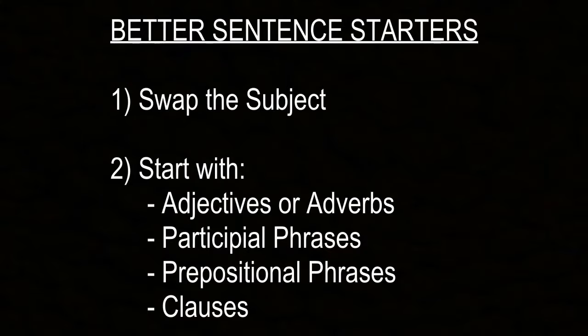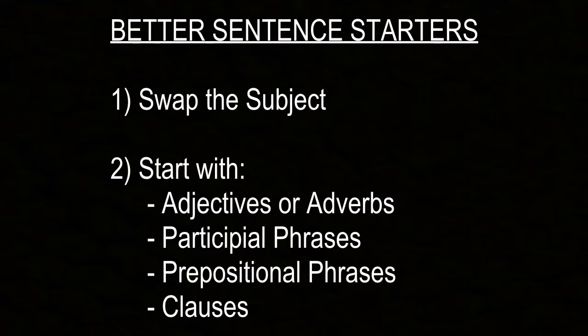Today I've got some advice that'll help you with this, and I've got plenty of examples that'll make it easy. Most of today's advice on starting off your sentences with better variety will fall under one of two categories. The first involves swapping out the subject of your sentence. The second involves pushing one of the following to the beginning: adjectives, adverbs, participial phrases, prepositional phrases, or clauses. I'll be talking about all of them in detail.